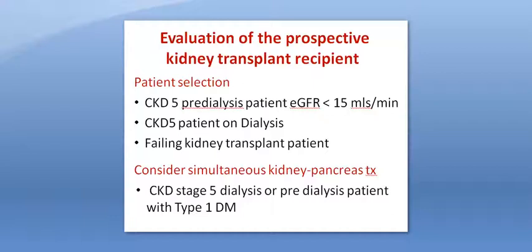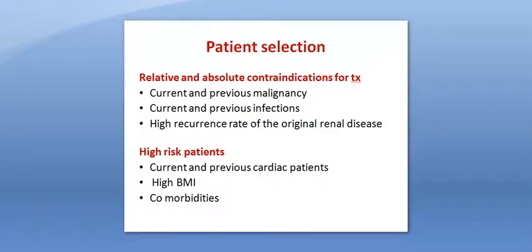The potential recipient is either a CKD stage 5 pre-dialysis patient with estimated GFR below 15 ml per minute. Discussion for kidney transplantation should start when the estimated GFR drops below 20 ml per minute, but the actual transplantation should not occur before the GFR drops to 15 ml per minute. The potential recipient could also be a CKD stage 5 patient on dialysis or a patient with a failing kidney transplant. Patients with type 1 diabetes, whether pre-dialysis or on dialysis, should be considered for simultaneous kidney-pancreas transplant.